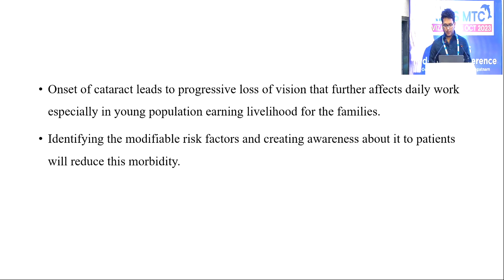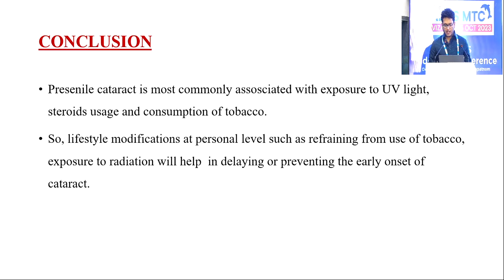Onset of cataract leads to progressive loss of vision that further affects daily work, especially in populations earning livelihood for their families. Identifying modifiable risk factors and creating awareness will reduce this morbidity. Conclusion: pre-senile cataract is most commonly associated with UV light exposure, steroid usage, and consumption of tobacco. Lifestyle modifications at a personal level, such as refraining from use of tobacco and exposure to radiation, will help in delaying or preventing early onset of cataract.